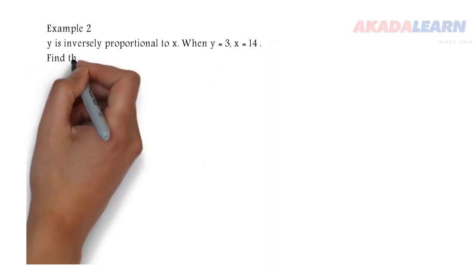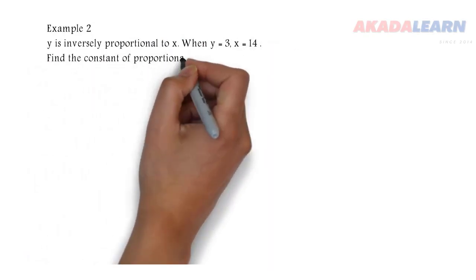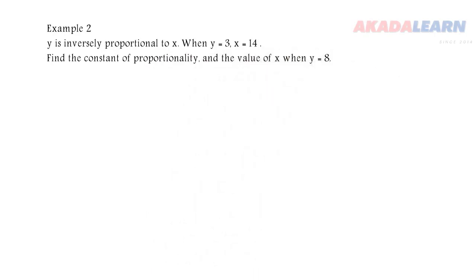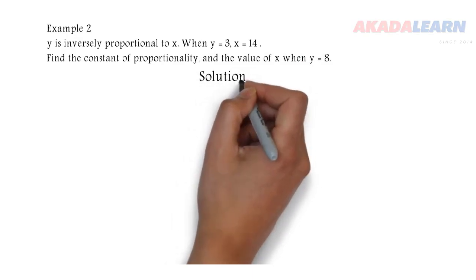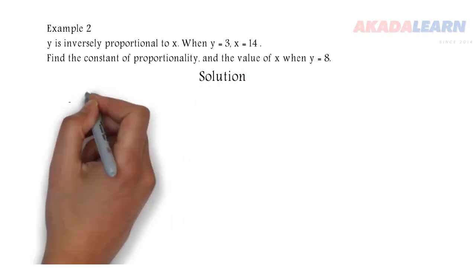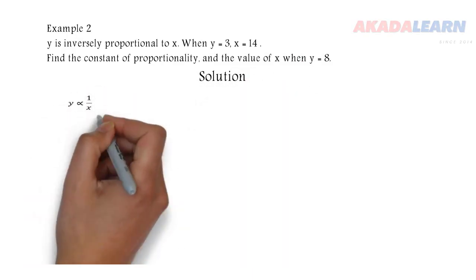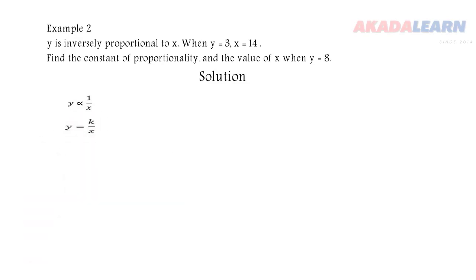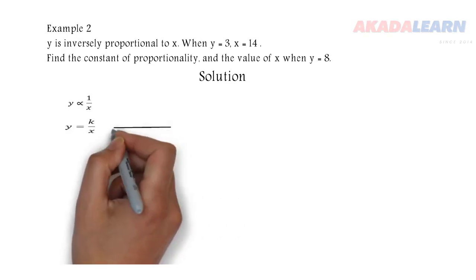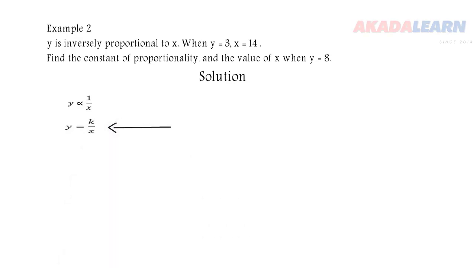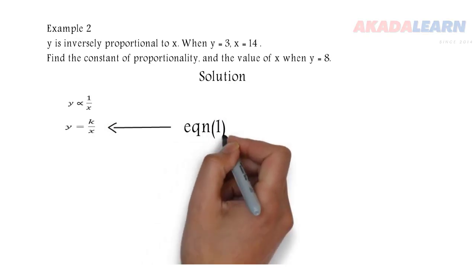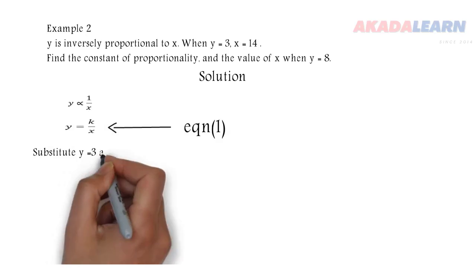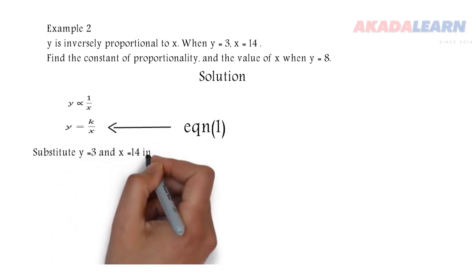Let's see an example. Y is inversely proportional to x. When y is 3, x is 14. Find the constant of proportionality and the value of x when y is 8. We write the inverse variation with our constant: y equals k over x — call this equation one. When y is 3 and x is 14, we substitute in to get 3 equals k over 14.